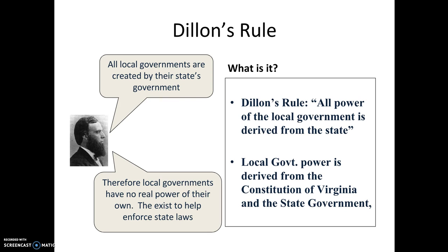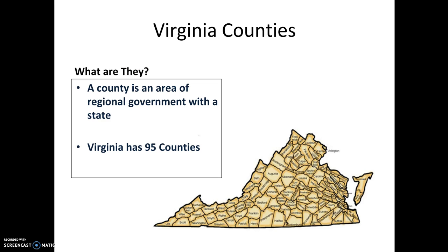Let's look at some examples of local government in Virginia. We'll talk first about counties. A county is just an area — a regional government within a state. The map that you're looking at on the screen is a county map of Virginia. Virginia has 95 counties, and you can see just how the state of Virginia is divided down into smaller parts.